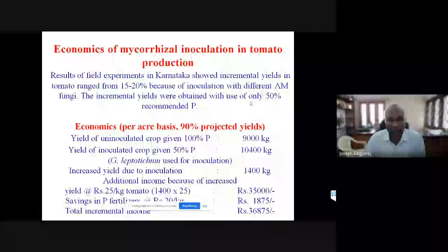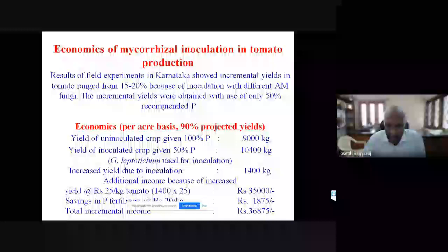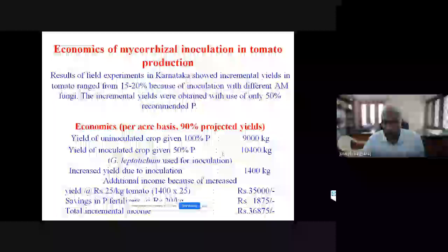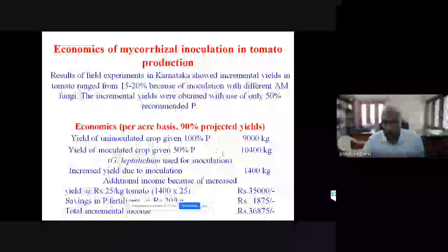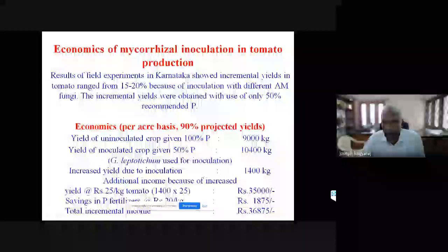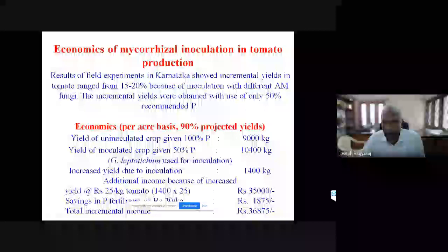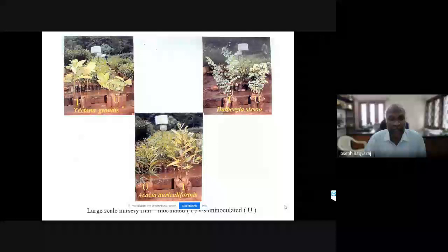The Planning Commission wanted me to attend their meeting as a special invitee and wanted the economics of mycorrhizal technology. For tomato, one inoculated crop with 100% phosphatic fertilizer gives 9,000 kg, but with 50% reduced phosphorus and mycorrhizal inoculation we get an additional 1,400 kg. Taking the tomato price at 25 rupees per kg, the farmer gets 36,875 rupees more per crop. They were very impressed, and this is how it was introduced as a thrust area of research.